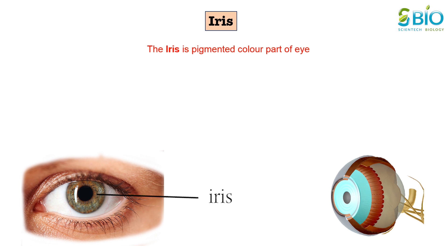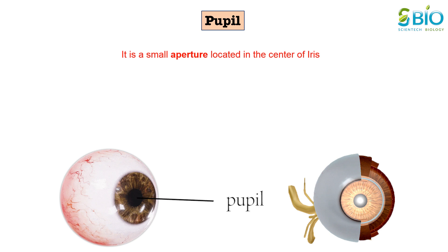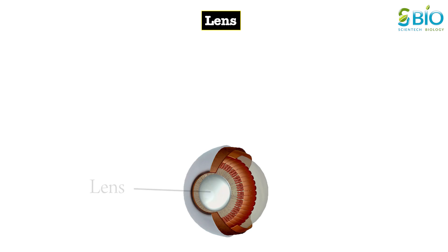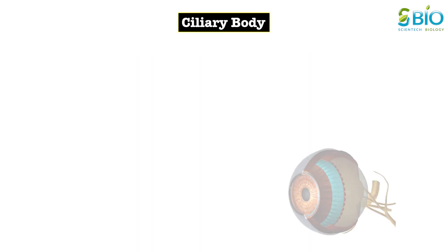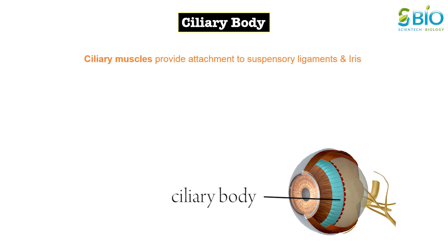The iris is the colored structure of the eye. The lens is attached to the ciliary body by ligaments. The lens along with the cornea refracts light so that it focuses on the retina. The ciliary body contains smooth ciliary muscles. It provides attachment to the suspensory ligaments and iris. The ciliary body controls the shape of the lens and contributes to the formation of aqueous humor.